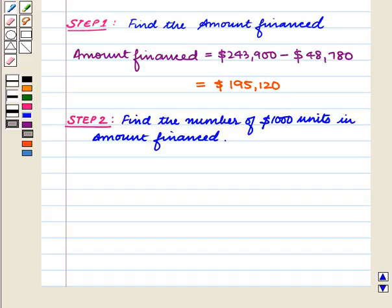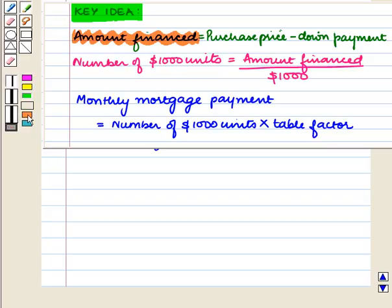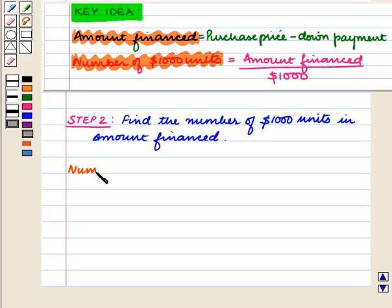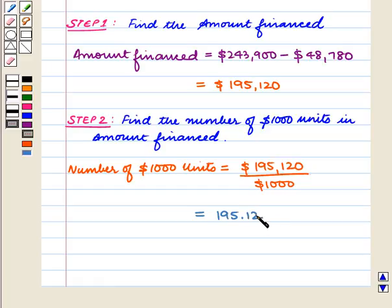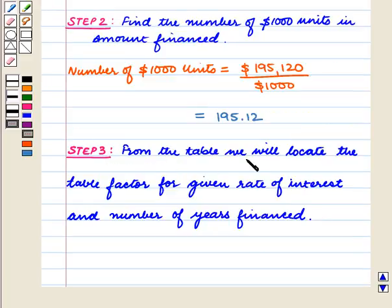Our next step is to find the number of $1,000 units in the amount financed. The number of $1,000 units equals amount financed divided by $1,000. So here, the number of $1,000 units equals $195,120 divided by $1,000, which equals 195.12.